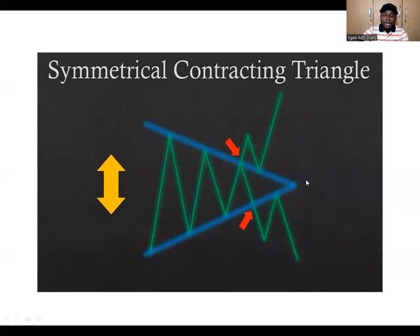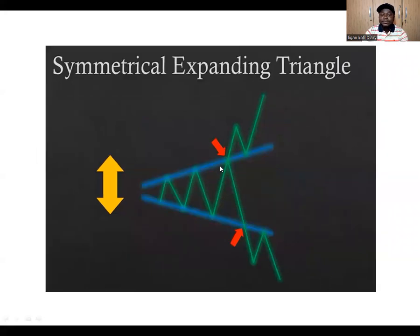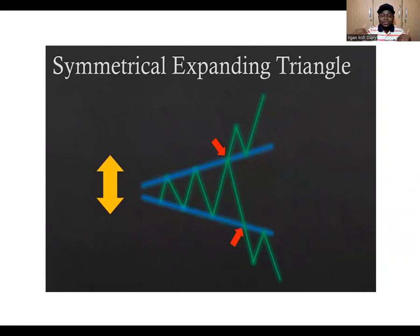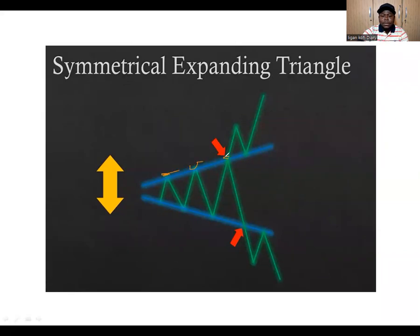The last neutral pattern is the expanding triangle. While the previous one was contracting, this one is expanding. In an expanding triangle, the resistance level gives higher highs while the support level also gives lower lows. Under normal circumstances, if you're receiving higher highs you'd expect higher lows — but in this pattern, you see higher highs and lower lows simultaneously.